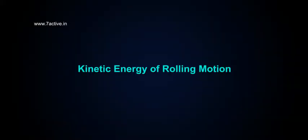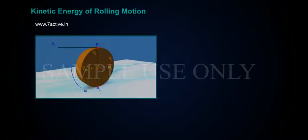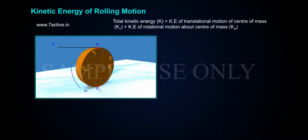Kinetic energy of rolling motion. Total kinetic energy, K, is equal to KE of translational motion of centre of mass, KT, plus KE of rotational motion about centre of mass, Kr. That is, K is equal to KT plus Kr.